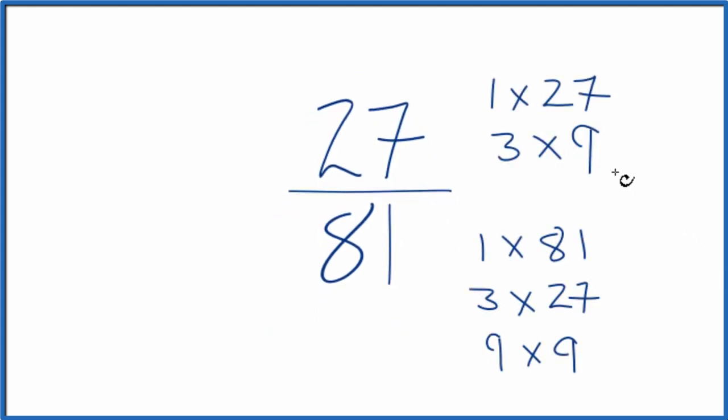So we're looking for the greatest common factor. These are the factors for 27 and 81. And it looks like the greatest common factor is actually 27. So we divide 27 by 27, then 81 by 27, and we'll have simplified 27 over 81.